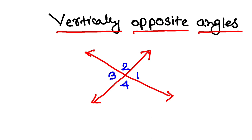Now, there are vertically opposite angles. Angle 1 is vertically opposite to angle 3, and angle 2 is vertically opposite to angle 4.